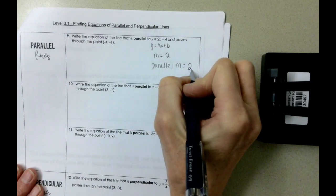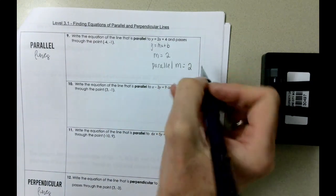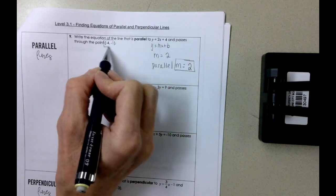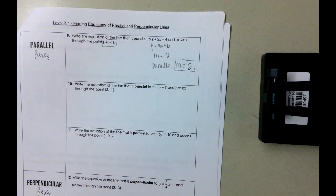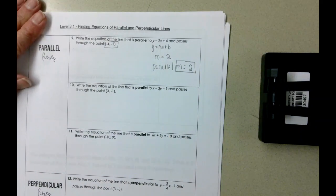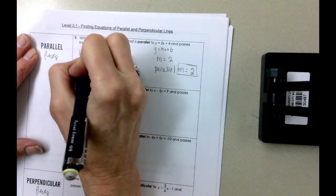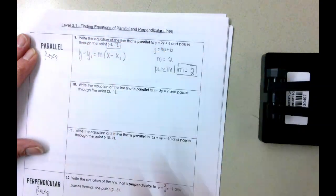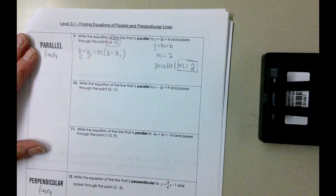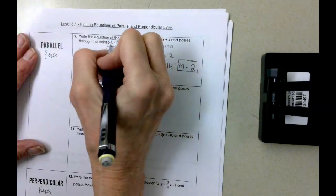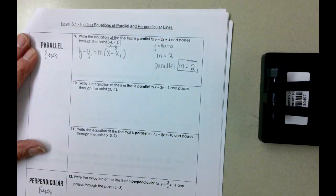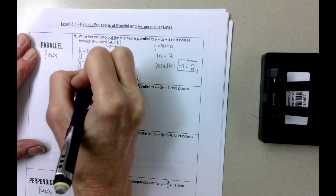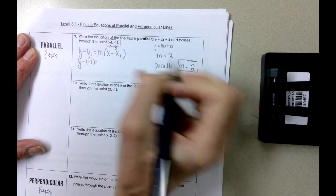And what we know is that parallel lines have the same slope, so our parallel slope is also two. And now we're going to use this value with this point to come up with our equation. So we're going to do y minus y1 equals m times x minus x1.